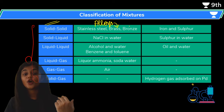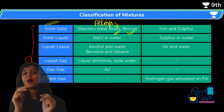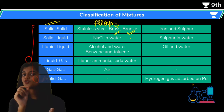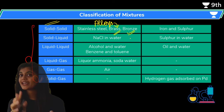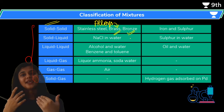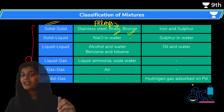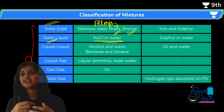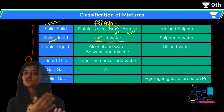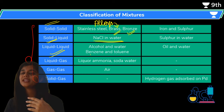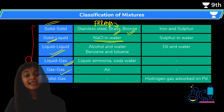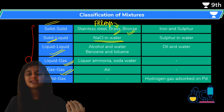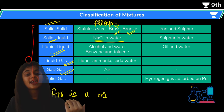Stainless steel, brass, and bronze are three alloys — find out their composition and which metals are present in what proportion. Next classification is solid-liquid: the example is salt in water — NaCl is solid and water is liquid, so salt in water is a mixture. Similarly, there is liquid-liquid mixture and gas-gas mixture. A simple example of a gas-gas mixture is air. Yes, you can say air is a mixture, and it comes under the category of a gas-gas mixture.